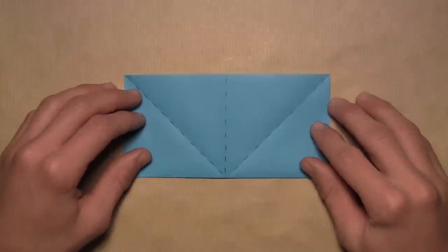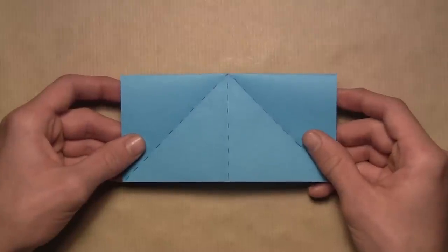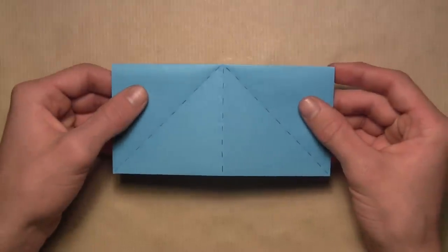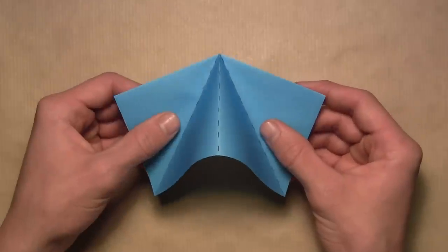And now we've finished all of the pre-creasing for this model. So we're simply going to turn it over and collapse along existing creases. From here we simply want to grab the left and right sides of the model, and we're going to push them in towards one another just like this.